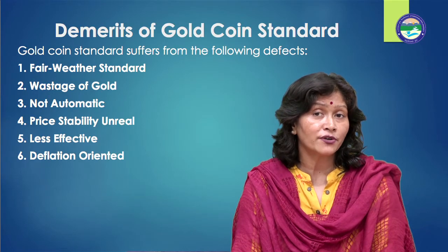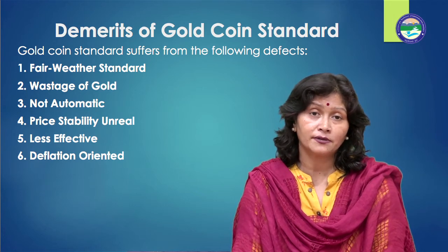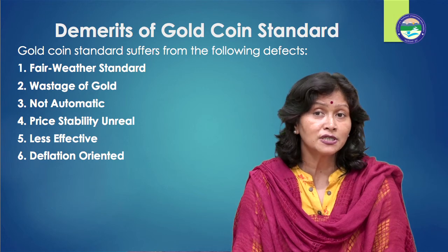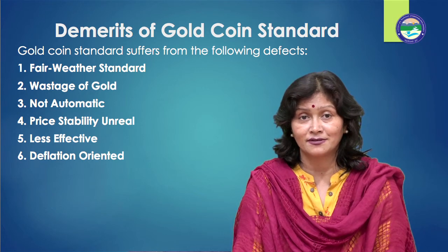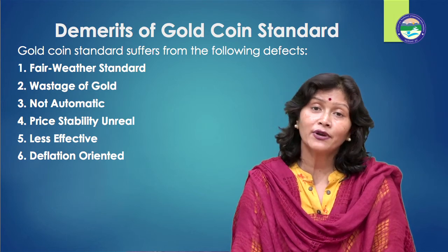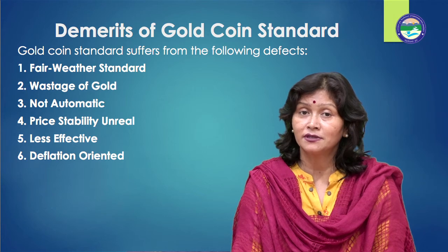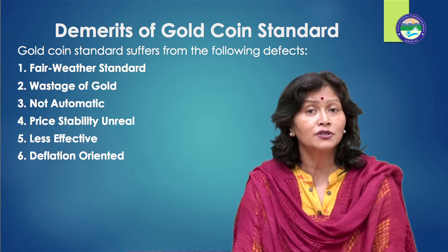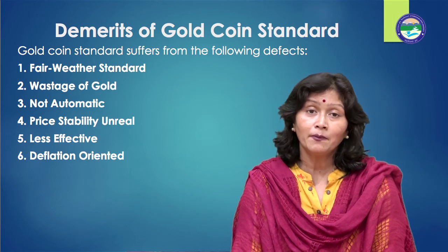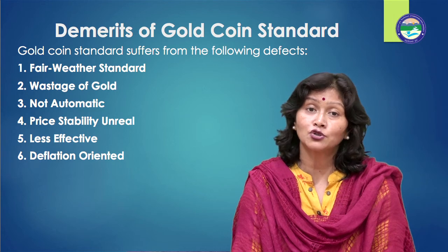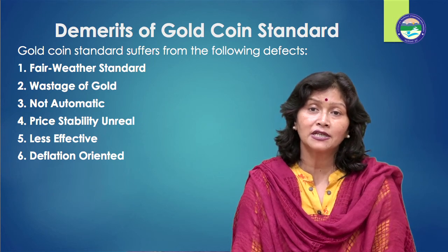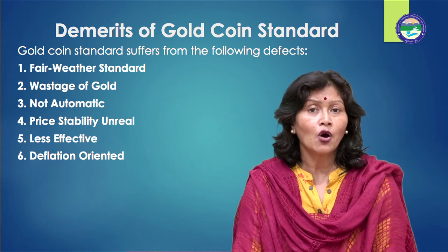Demerits of gold coin standard: number one, fair weather standard — it operates smoothly during peacetime but fails to work properly and inspire public confidence at the time of economic crisis. Number two, wastage of gold — there is a great deal of wastage of gold under this standard; circulation of gold coins suffers depreciation. Moreover, since paper currency is fully backed by gold, gold remains idle while in reserves. Number three, it is not automatic — gold coin standard operates automatically with the cooperation of participating countries, but after World War I, in the absence of international cooperation, this standard ceased to be automatic in its functioning.